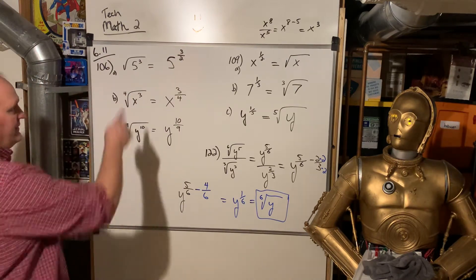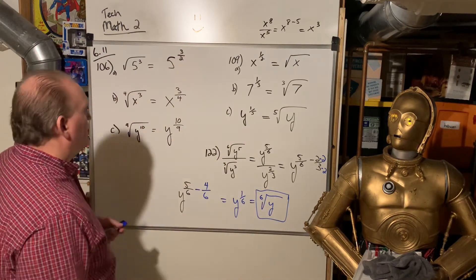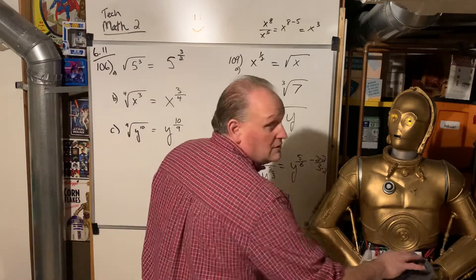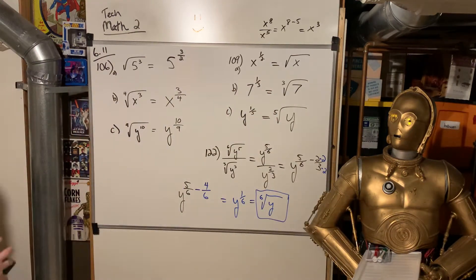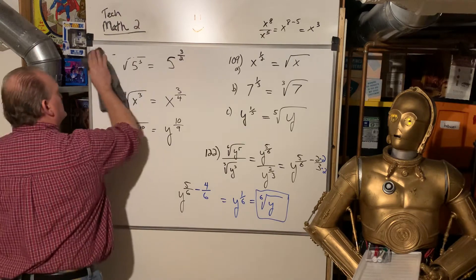Okay, so that one was a little tough. These are pretty quick. 106 and 109. But 122, that one was a little more challenging. All right, let's take a look at 612.